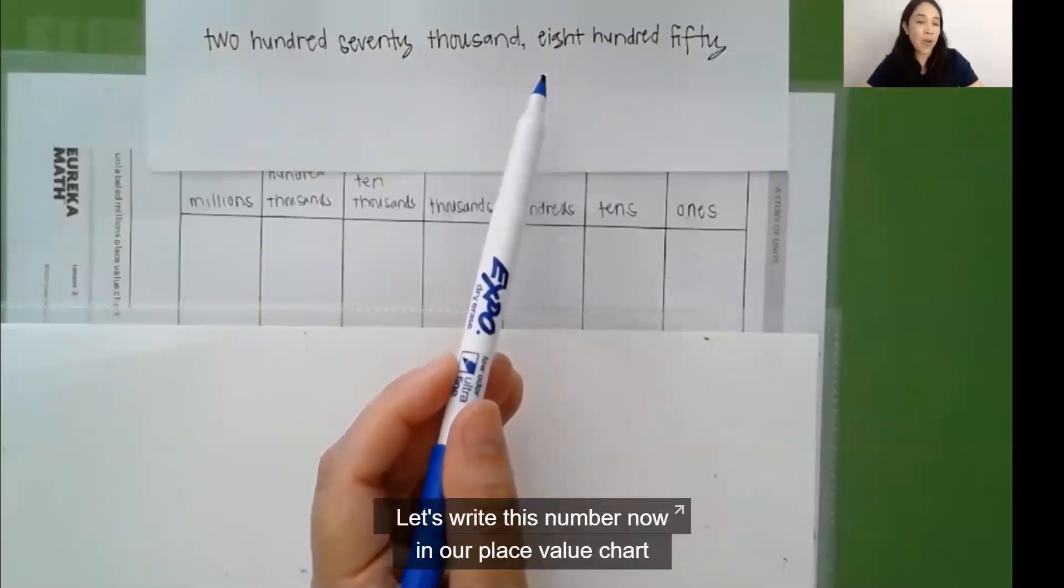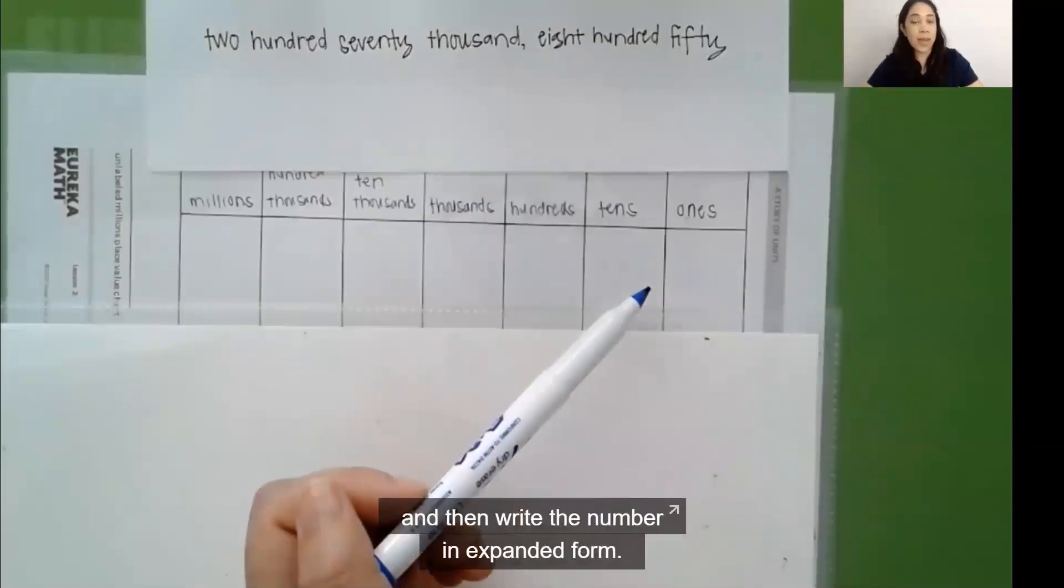Let's write this number now in our place value chart and then write the number in expanded form.